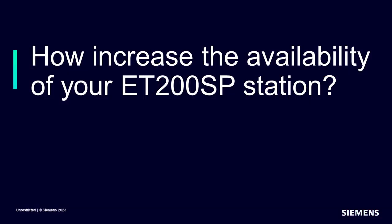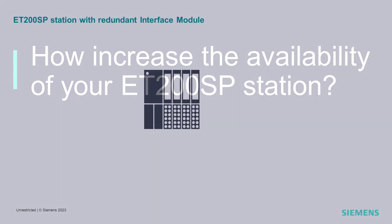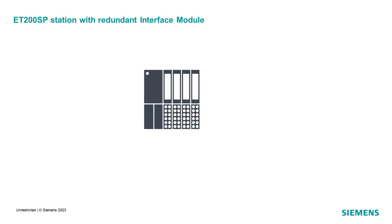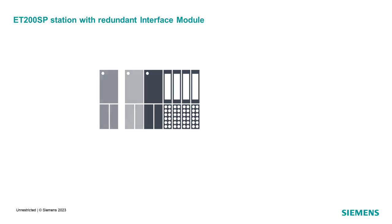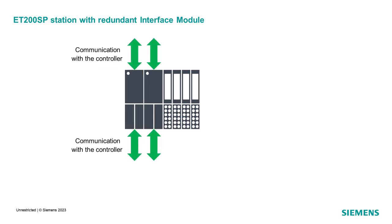To increase the station availability, Siemens has introduced with TIA Portal version 18 a new redundant solution based on PROFINET system redundancy R1. Thanks to an additional interface module, the station can redundantly communicate over two different paths with the controller S7-1500H. If one interface fails, the remaining interface module will take over the communication and therefore there is no impact on the customer process.